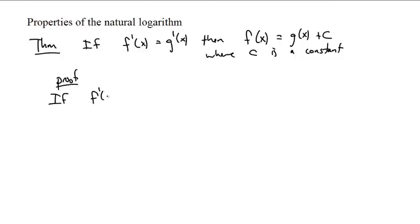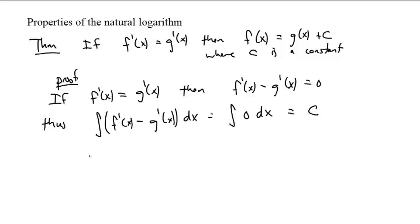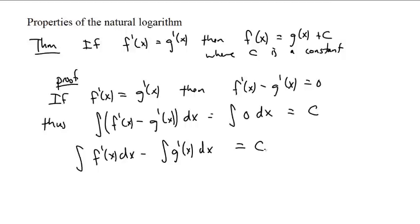If f'(x) is the same thing as g'(x), then that means f'(x) minus g'(x) is 0. Thus, the integral of f'(x) minus g'(x) dx would be the same as the integral of 0 dx, whose antiderivative is any constant c. This integral can be broken up: the integral of f'(x) dx minus the integral of g'(x) dx equals c. The integral of f'(x) is the most general function whose derivative is f'(x).